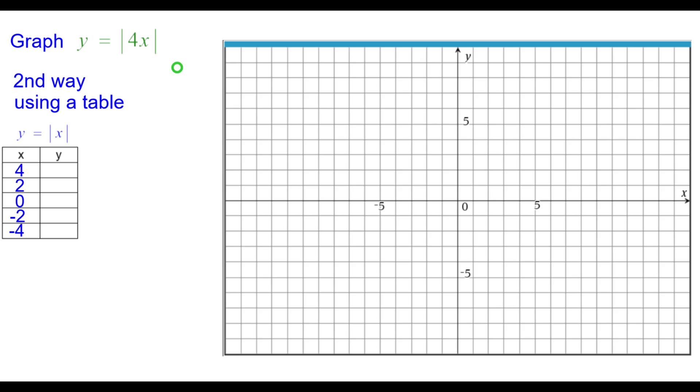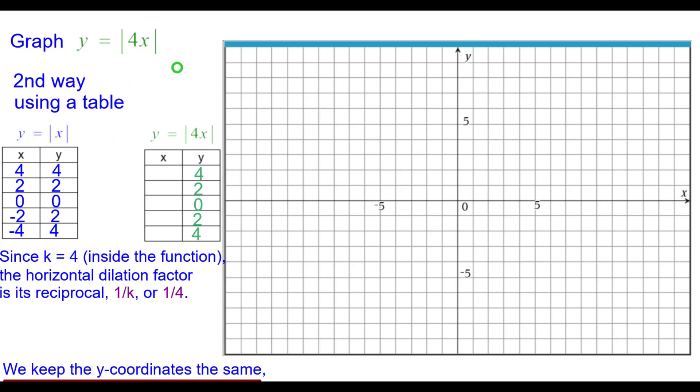Second way is using a table. This is our normal absolute value table. Here we use multiples of 2 instead of just whole numbers, integers. Since k equals 4 inside the function, the horizontal dilation factor is its reciprocal 1 fourth. We keep the y coordinates the same.